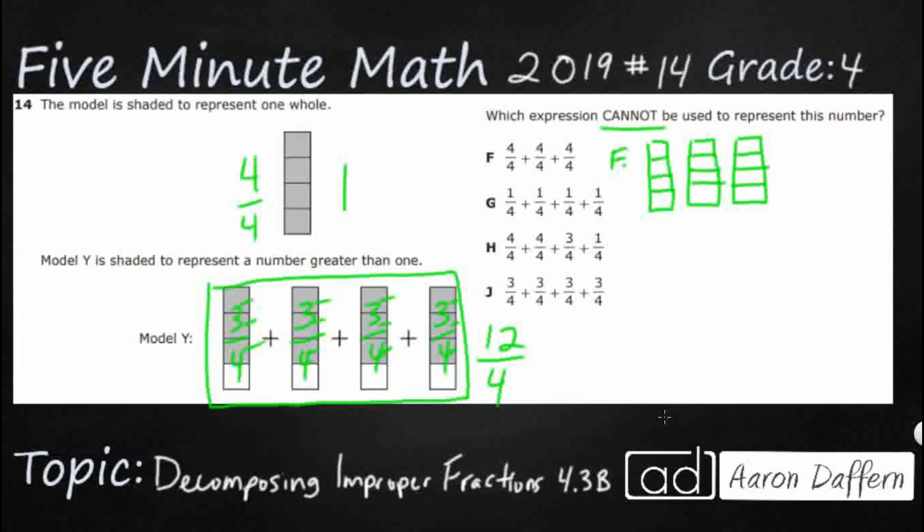So this is F. I've just got three sets of 4 fourths. So that's 1, 2, 3, 4, 5, 6, 7, 8, 9, 10, 11, 12. Yeah.